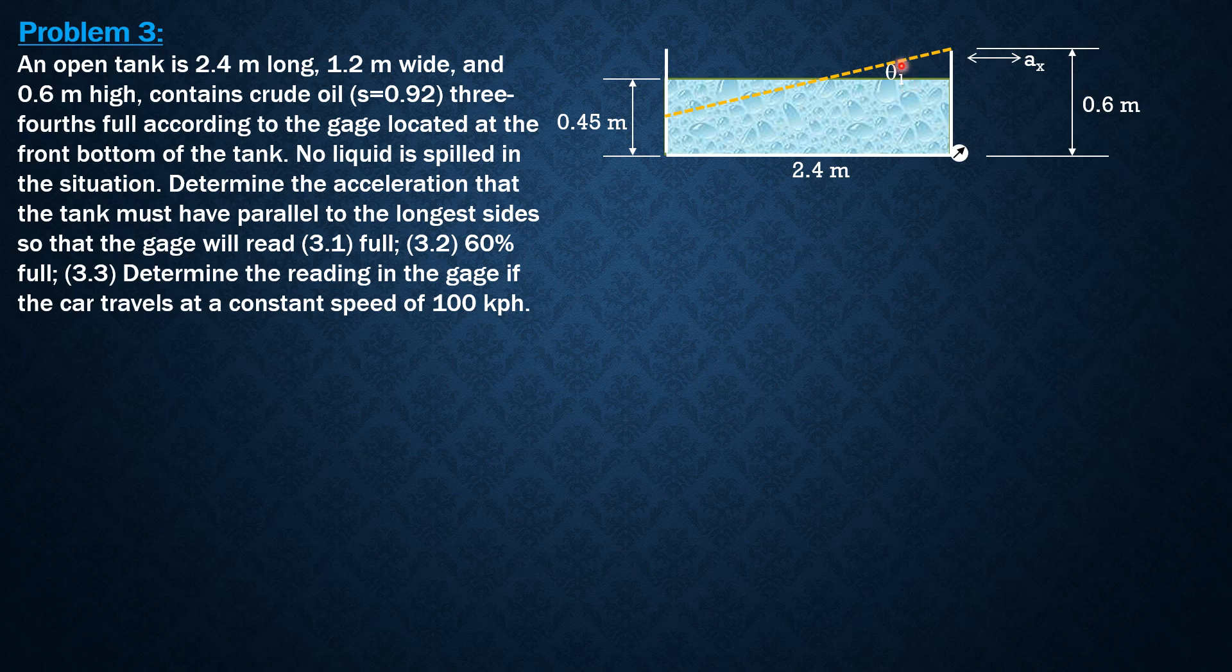Acceleration due to gravity from the derived formula equals, by trigonometry in this right triangle, quantity (0.6 minus 0.45) or 0.15 over 1.2—this is 1.2, half of 2.4. So tangent of theta 1 equals negative Ax over G equals 0.15 over 1.2. From there we can solve for Ax, and it is negative 1.226 meters per second squared.